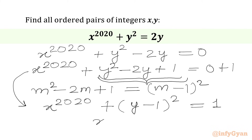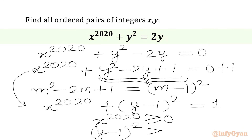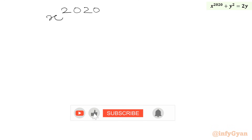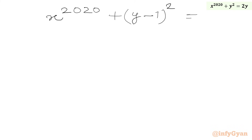Now we know that x power 2020 is always a non-negative number. Similarly, (y minus 1) squared will also always be non-negative, always greater than or equal to 0. So we have x power 2020 plus (y minus 1) squared equals 1, where both terms are non-negative.